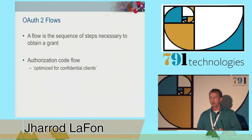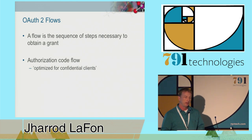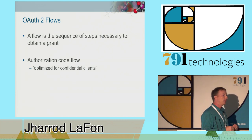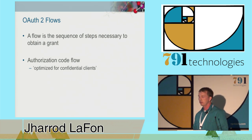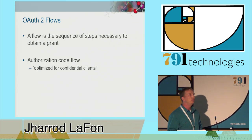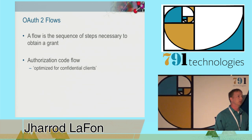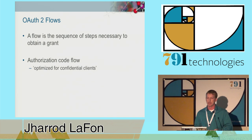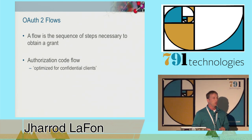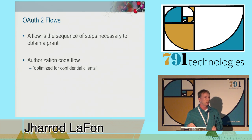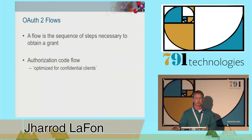I'm going to focus on one particular flow: the authorization code flow. According to the spec, it is optimized for confidential clients. A confidential client is a client that is capable of keeping a secret. For example, if you implemented the client in JavaScript in a web browser, that would not be a confidential client because it can't keep any secrets from the user. However, a Django server is capable of keeping secrets—we all depend on that—and therefore it's a confidential client. The authorization code flow allows us to get a token to the client without the user or anyone else having access to the token.